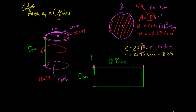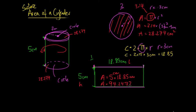So this just becomes a simple formula. We know the height of this side is 5 centimeters and the length of this side is 18.85 centimeters. The total area of this rectangle is equal to 5 centimeters multiplied by 18.85 centimeters, which gives us an area of 94.2477 centimeters squared.